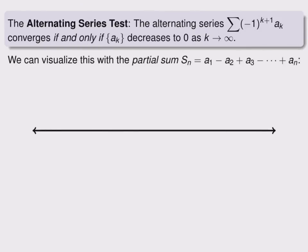One of the main reasons to study alternating series is the alternating series test. This is a test which tells us exactly when an alternating series converges or diverges. If we have an alternating series, as written here, then it converges if and only if the sequence of positive terms decreases and goes to zero as k goes to infinity.